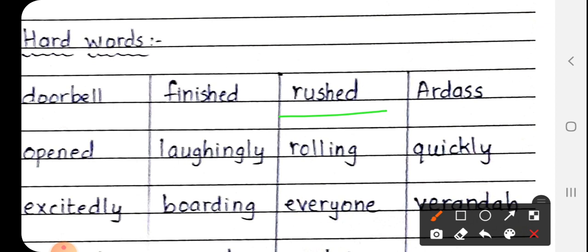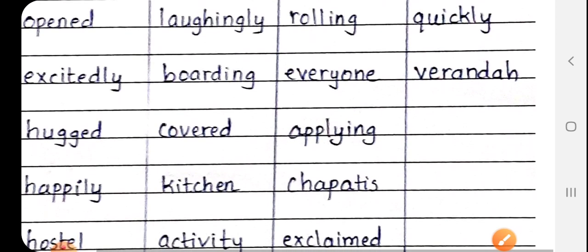Next is rolling, R-O-double L-I-N-G. Rolling means belna. When we roll roti, that's called rolling. Next is everyone, E-V-E-R-Y-O-N-E. Everyone means har koi.